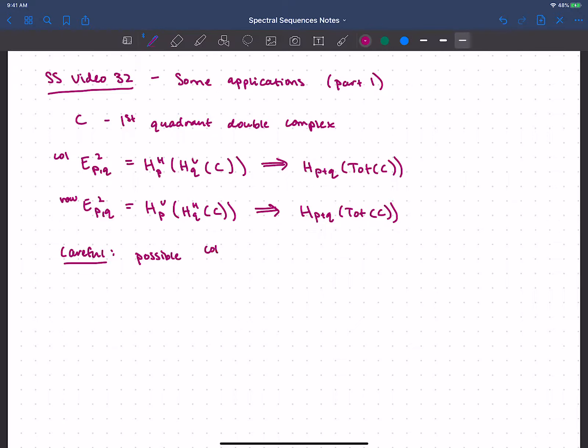So it's possible that you compute the infinity page for the column filtration and it's not the same as the E infinity page for the row filtration. But what do I mean when I say that they converge to the same thing?